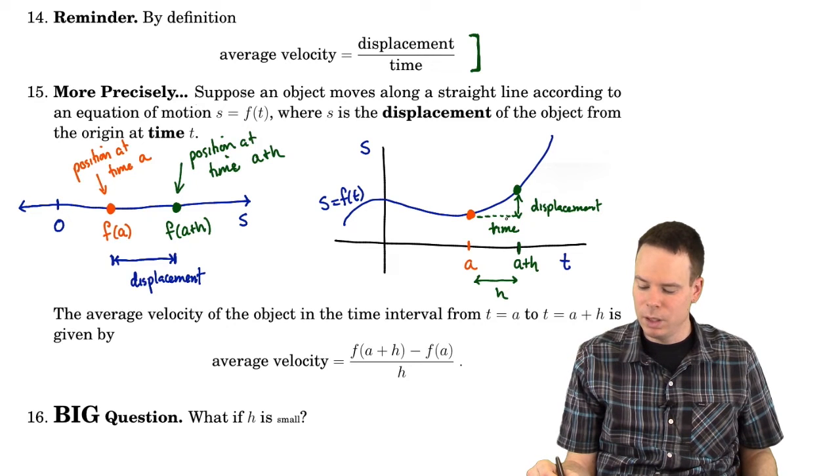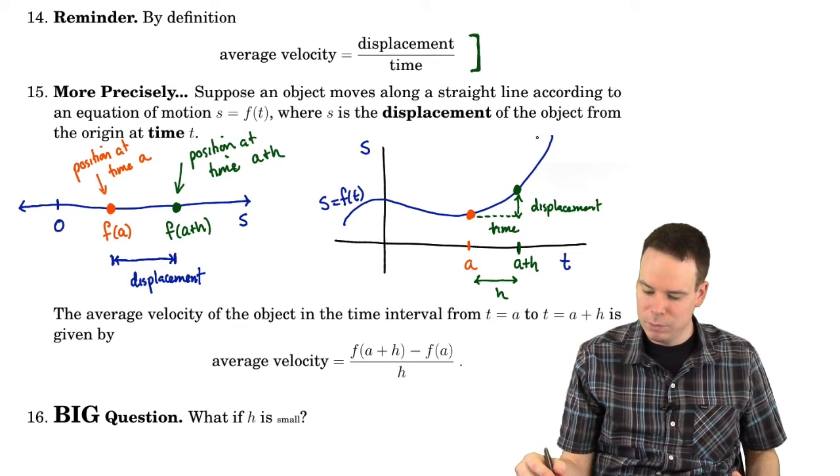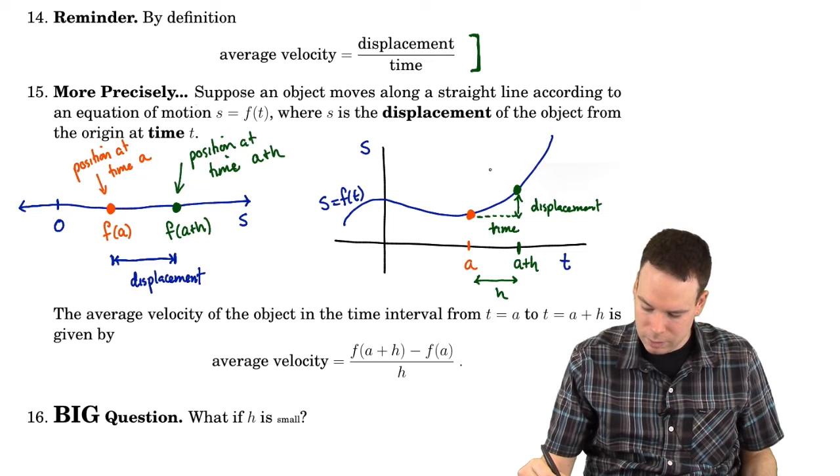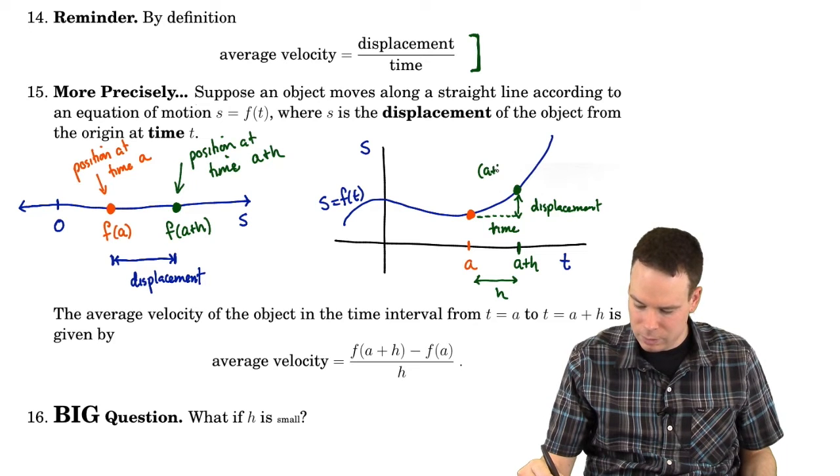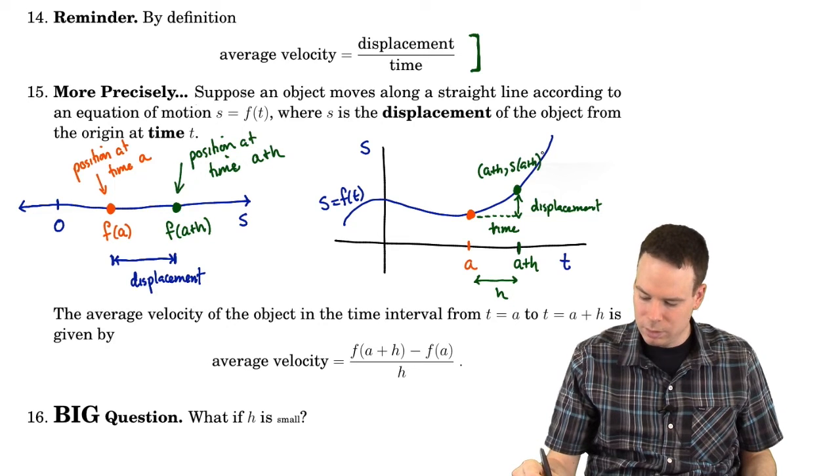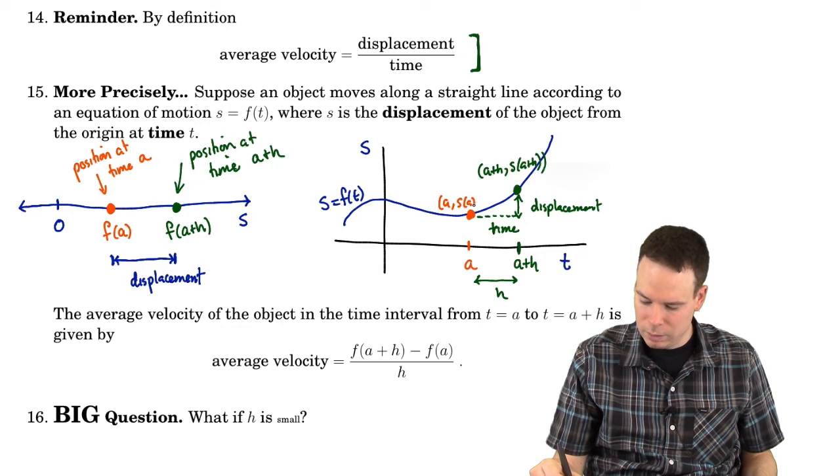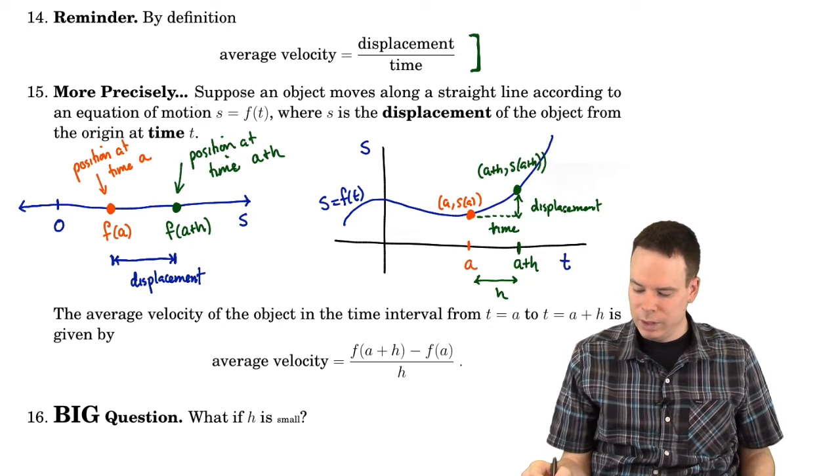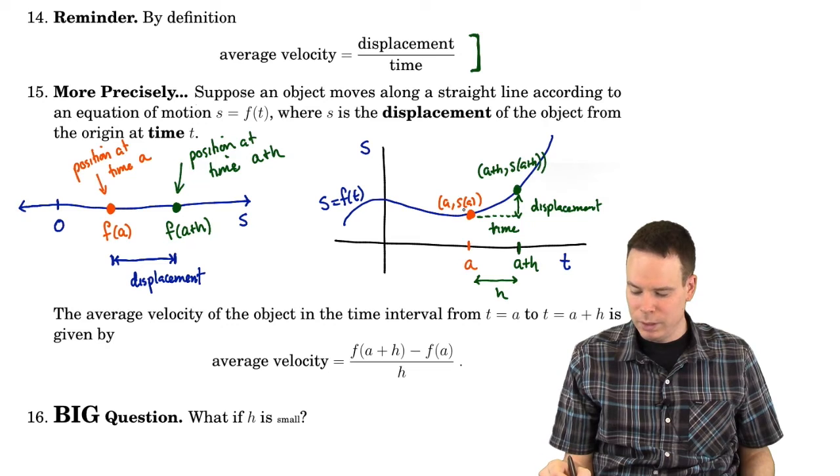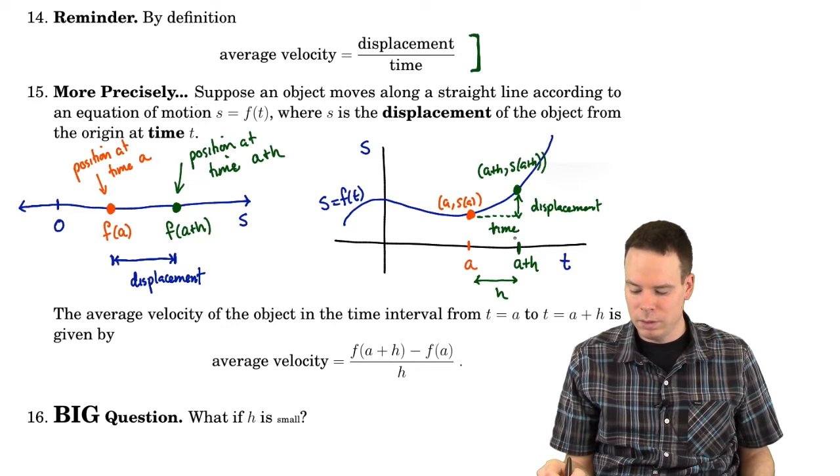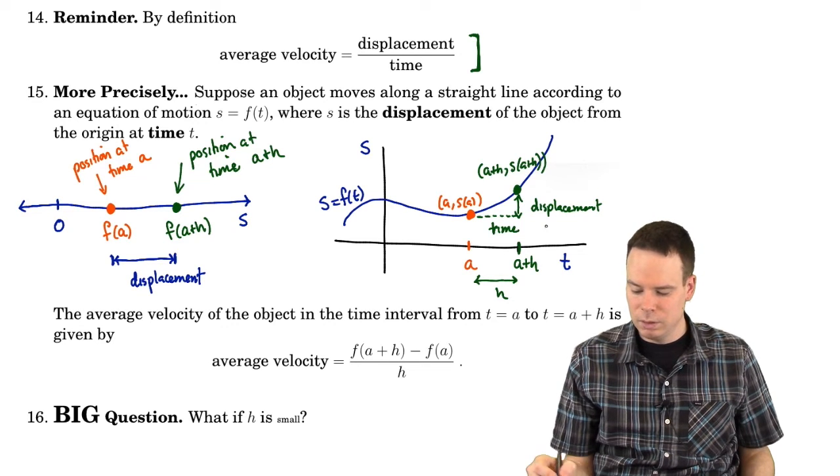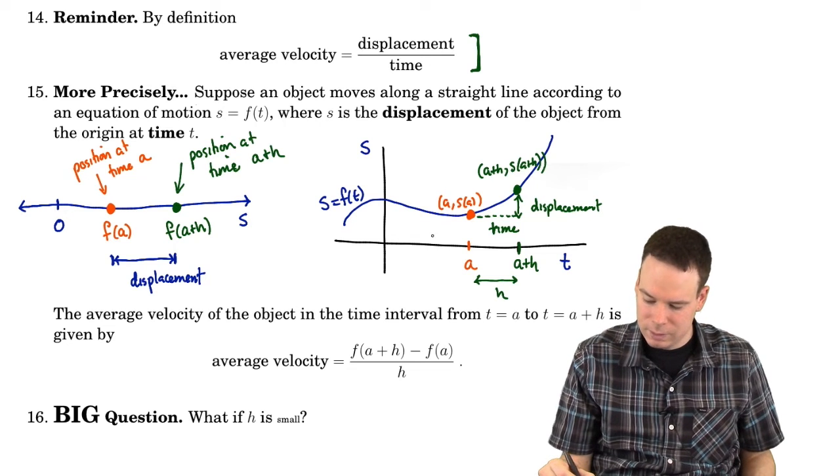So what is displacement over time? Well, displacement over time is, this was a plus h, s of a plus h. That's that point. And this point was s of a. So our displacement is s of a plus h minus s of a. And our time is h. So it's the slope of this secant line.